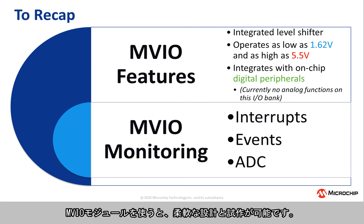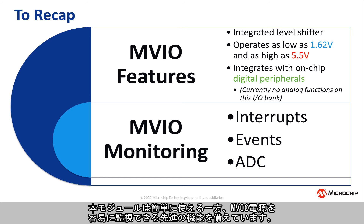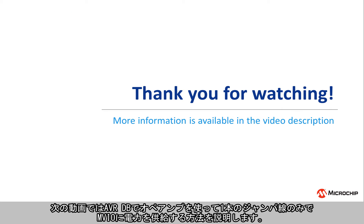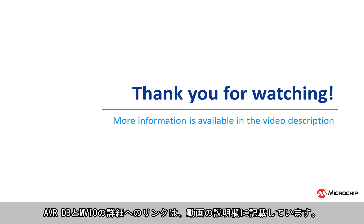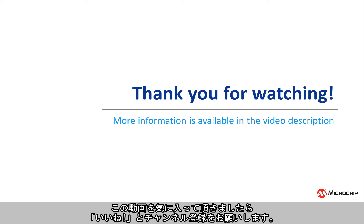The MVIO peripheral offers unparalleled flexibility in design and prototyping. This peripheral, while simple to use, has advanced features that enable effortless monitoring of the MVIO power supply. In the next video, I will show you a way to use the operational amplifiers on AVRDB to power the MVIO with only a single jumper wire. For more information about AVRDB and MVIO, please see the links in the video description. If you liked this video and would like to see more, please like and subscribe.